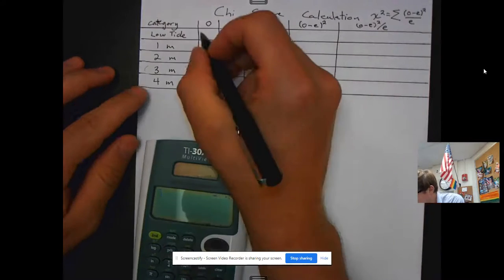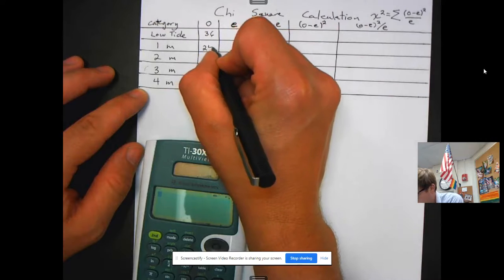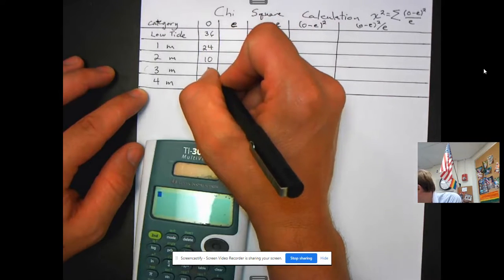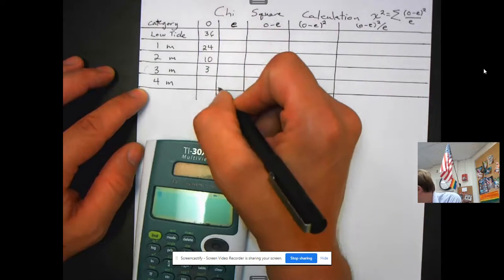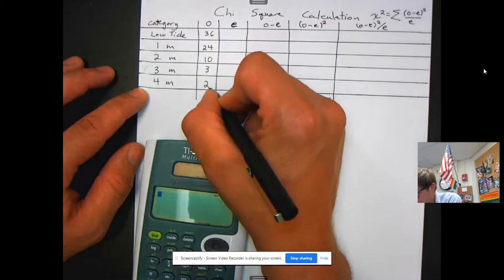For the low tide, they observed 36. For one meter, they observed 24. For two meters, they observed 10. For three meters, they observed three. And for four meters, they observed two.